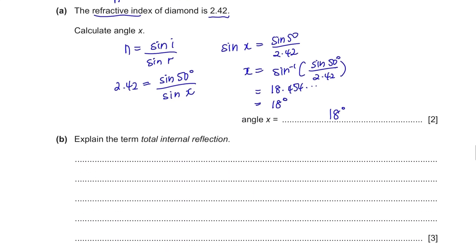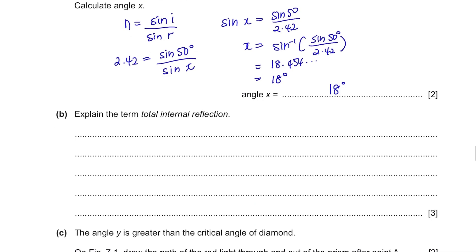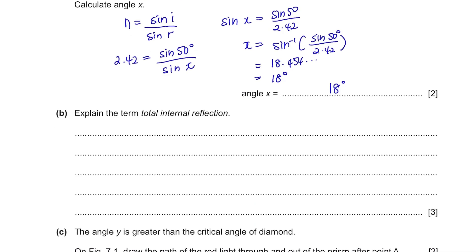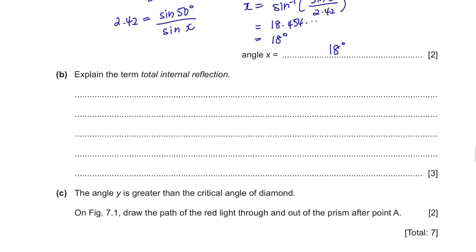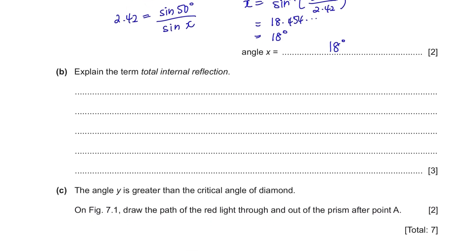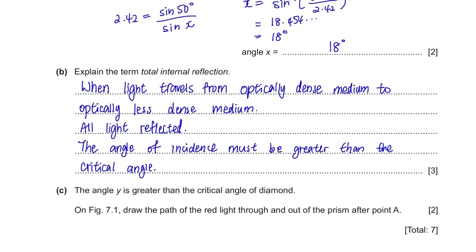Part B: Explain the term total internal reflection. This is a definition you must remember. Total internal reflection occurs when light is traveling from an optically dense medium to an optically less dense medium, and the result is that all light will be reflected. It can only happen when the angle of incidence is greater than the critical angle.